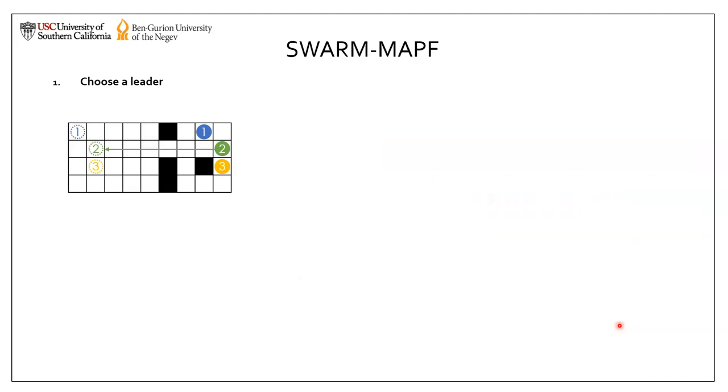Now, let's look at our algorithm, SWARM-MAPF. SWARM-MAPF combines the idea of multi-agent pathfinding from artificial intelligence and formation control from robotics.